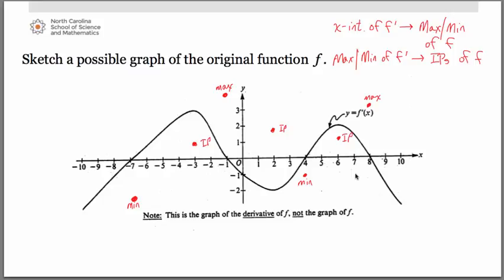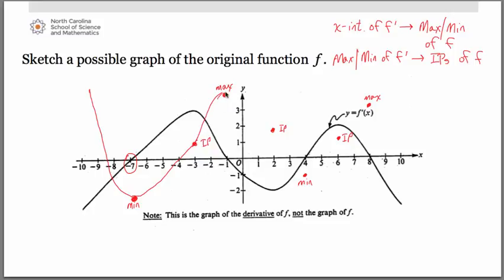Now we have guidelines to use as we draw the graph, working left to right. On the far left, the derivative graph is below the x-axis, so the derivative is negative — meaning the original is decreasing. At the same time, the derivative itself is increasing, so the original is concave up. So we start decreasing and concave up until we hit the minimum at negative 7. From there, f prime is positive, so the original is now increasing. The derivative is still increasing, so the original continues concave up until we hit the inflection point at negative 3. After that, we keep increasing but change to concave down, up to the maximum at negative 1.